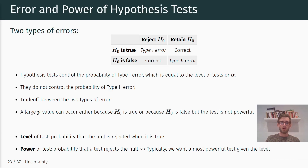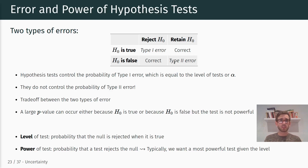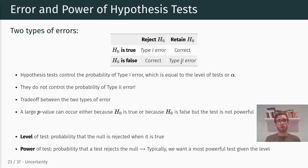The significance level of our test is the probability that the null is rejected when it is true — that's our Type I error. The power of a test is the probability that the test rejects the null assuming that the null hypothesis is actually false. So statistical power is essentially one minus the probability of making a Type II error.